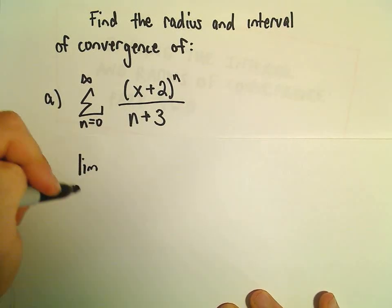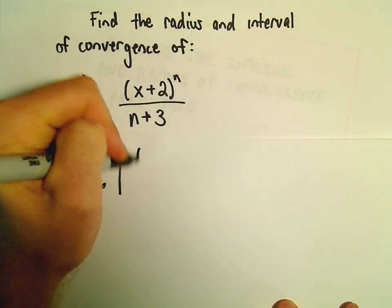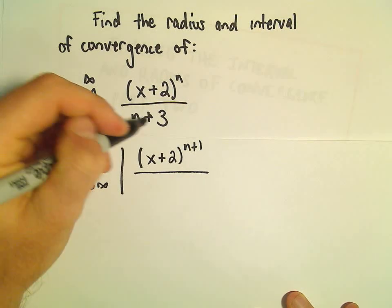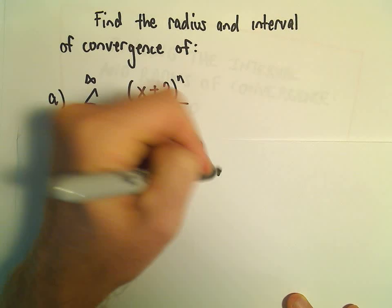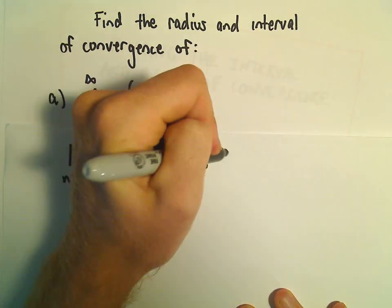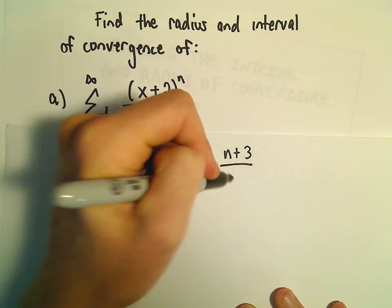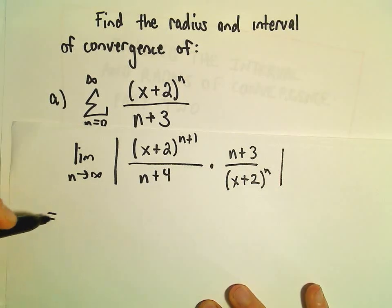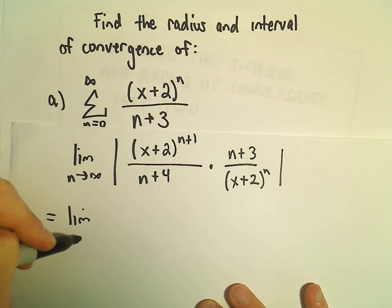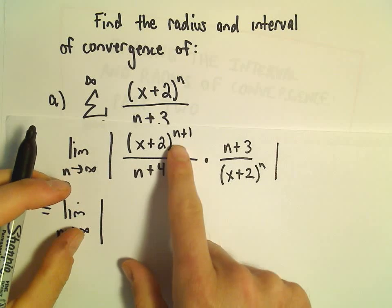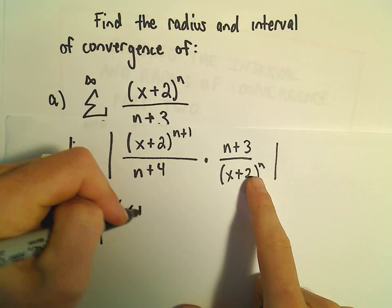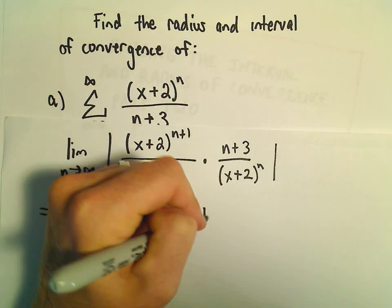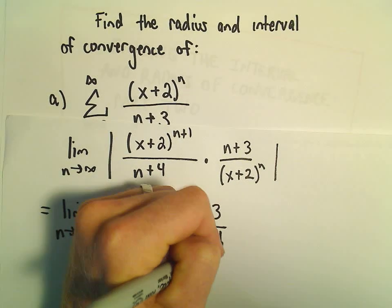We'll use the ratio test here. We'll have x plus 2 raised to the n plus 1, and then we'll have n plus 1 plus 3, which gives us n plus 4. We'll multiply by the reciprocal: n plus 3 over x plus 2 raised to the n. We can simplify: x plus 2 to the n plus 1 over x plus 2 to the n leaves us with x plus 2 to the first power, and then n plus 3 over n plus 4.